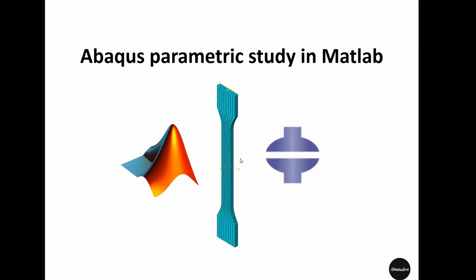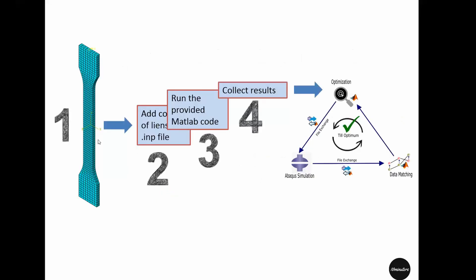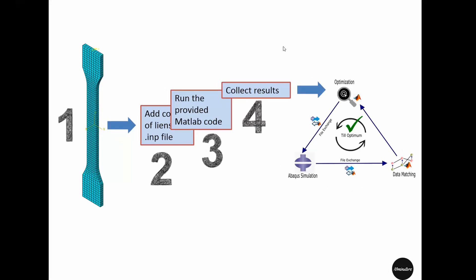Please check that video linked in the description before you watch the rest of this video because that's a prerequisite. In this video we will use that procedure of reading nodal or element output and then further add optimization for optimizing different parameters in the model. The nodal or element output that you read is then put in an optimization loop in MATLAB.